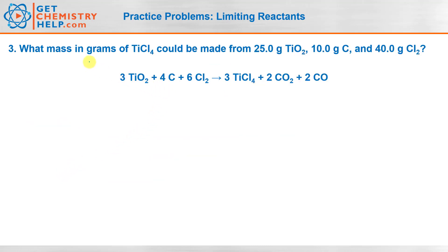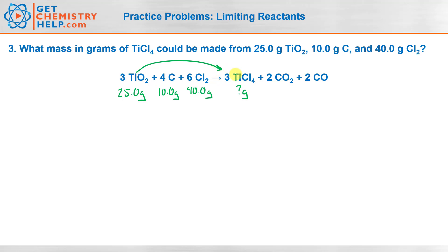Let's try one last one. What mass in grams of titanium(IV) chloride could be made from 25.0 grams of titanium(IV) oxide, 10.0 grams of carbon, and 40.0 grams of chlorine? So we have 25.0 grams of titanium(IV) oxide, 10.0 grams of carbon, and 40.0 grams of chlorine, and the question is how many grams of titanium(IV) chloride. This time we have three reactants, but it works the exact same way — instead of doing it twice, we'll do it three times, converting each reactant into titanium(IV) chloride.